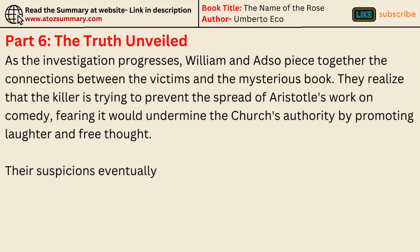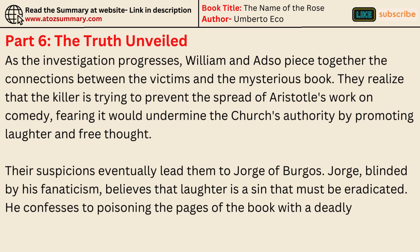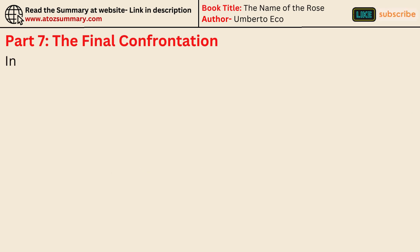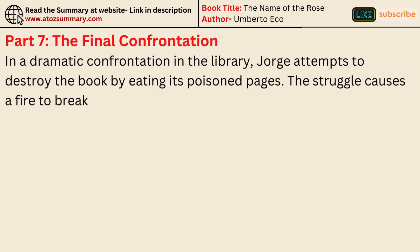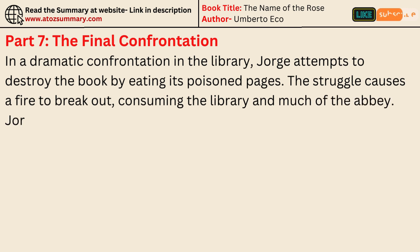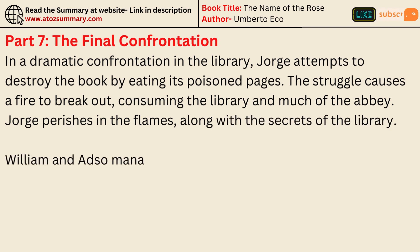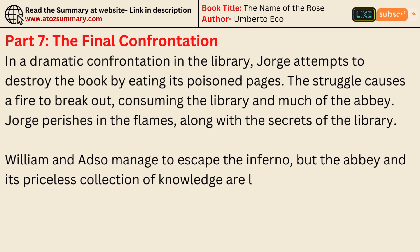Their suspicions eventually lead them to Jorge of Burgos. Blinded by his fanaticism, Jorge believes that laughter is a sin that must be eradicated. He confesses to poisoning the pages of the book with a deadly substance, knowing that anyone who reads it will die. In a dramatic confrontation in the library, Jorge attempts to destroy the book by eating its poisoned pages. The struggle causes a fire to break out, consuming the library and much of the abbey. Jorge perishes in the flames along with the secrets of the library, and though William and Adso manage to escape, the abbey and its priceless collection of knowledge are lost.